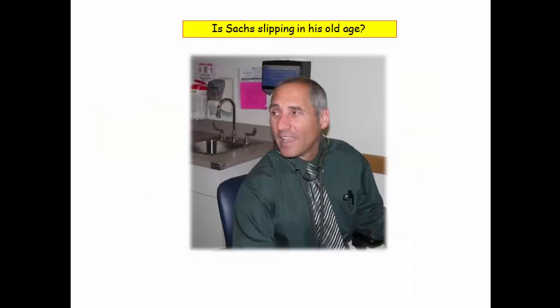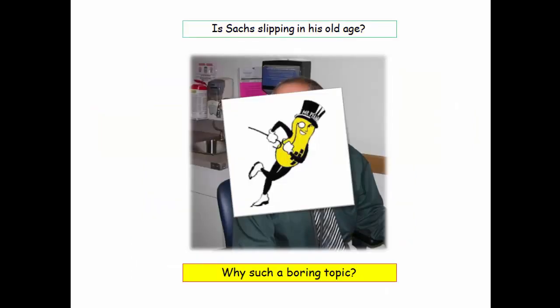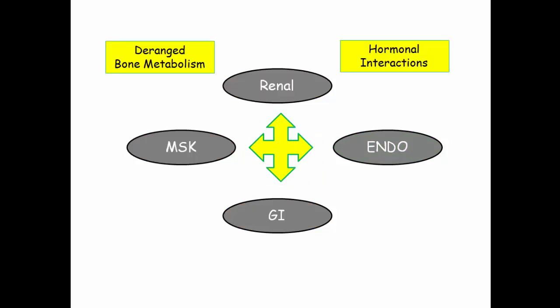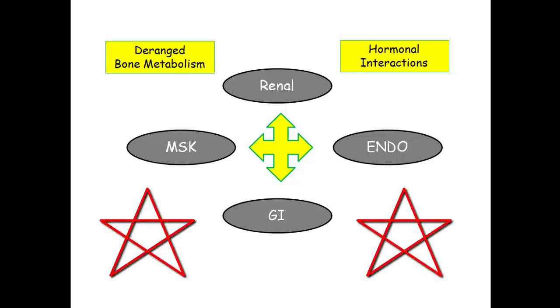I can address your concerns in one simple word — well, actually four simple words: Renal, GI, MSK, and Endo. Any disease that crosses multiple organ systems gets them really jacked up down there in Philadelphia. Renal osteodystrophy sits right at the crossroads of four organ systems and tests your understanding of bone metabolism and the key hormonal interactions. Even if you find this incredibly boring, you really do need to know this high-yield material.